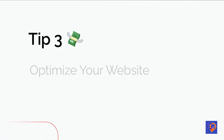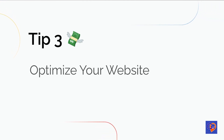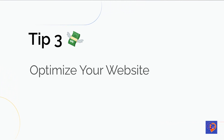Tip 3: Make sure that your website URL, content, and URL structure also include relevant keywords. For example, include your location in your website's title tags and meta descriptions. Title tags and meta descriptions are the snippets of text that appear in search results and give users an idea of what your website is about. Including your location in these tags can help signal to Google that your website is relevant for local searches.